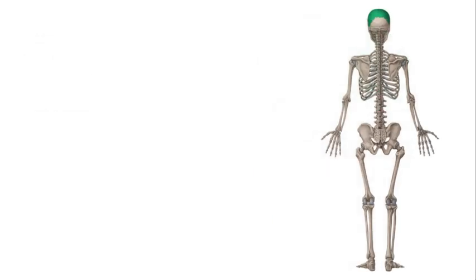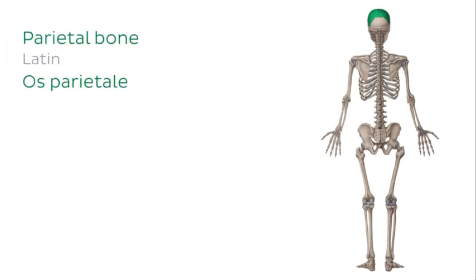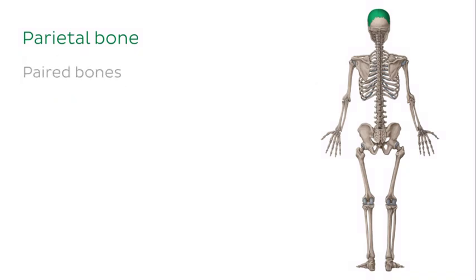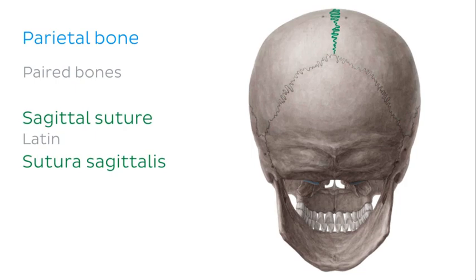Moving posteriorly, we have the parietal bones, which articulate with the frontal bone and are also bones of the neurocranium. These paired bones are situated on the top and sides of the head, and they're connected to each other at the midline of the roof of the skull via the sagittal suture, which is an example of a fibrous joint.